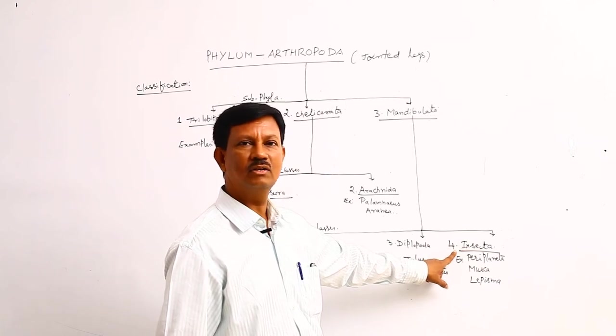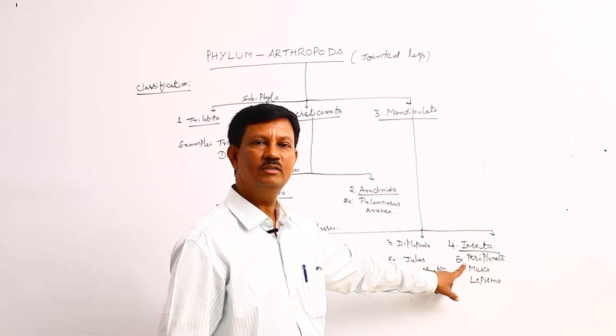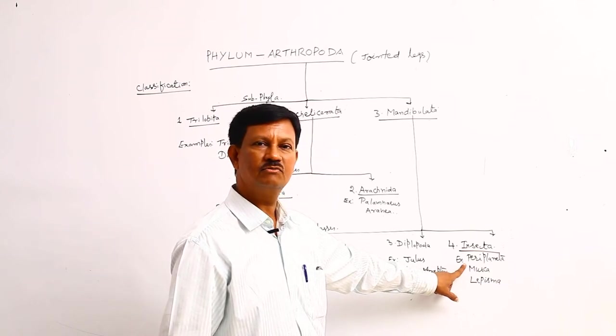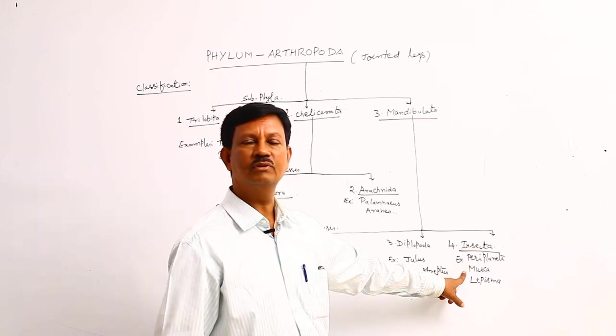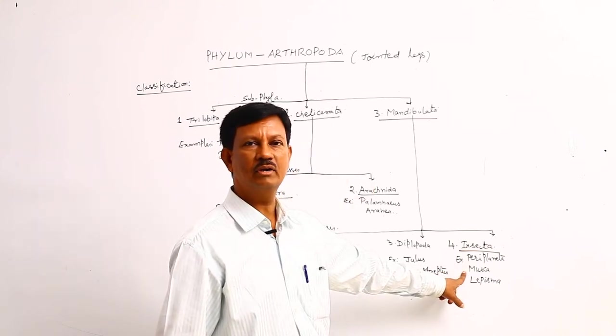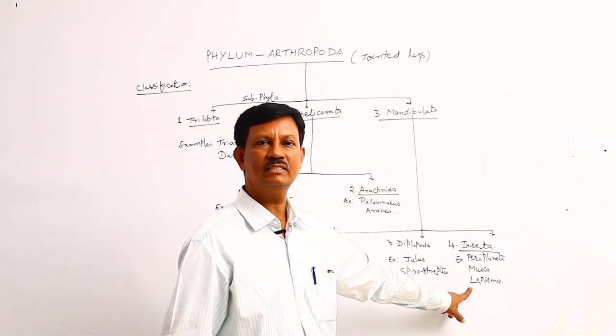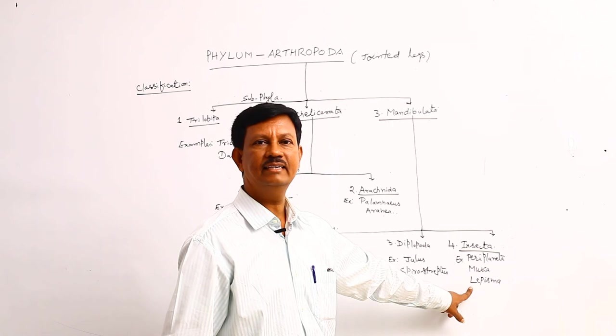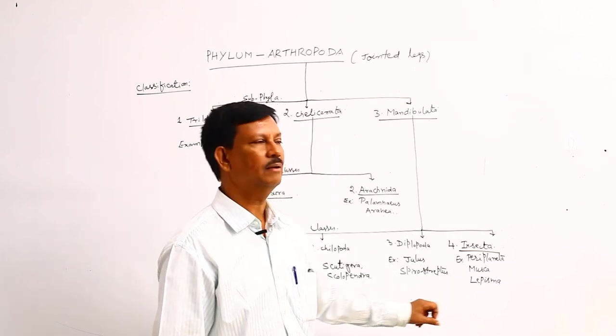Here the example is the Periplaneta, commonly known as cockroach, which is found in our kitchens. And Musca, also found in our houses, hence it is known as housefly. And Lepisma, known as the silverfish. Here it does not contain any wings, that is the special character of the Lepisma.